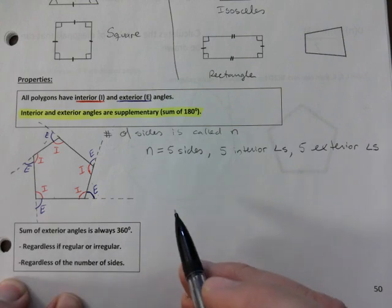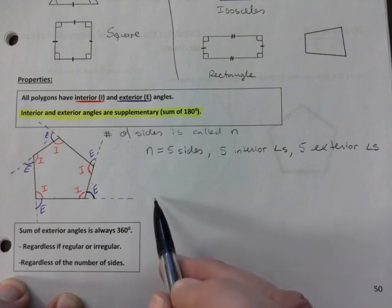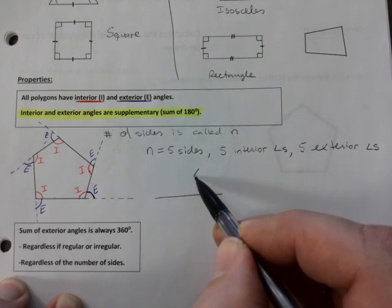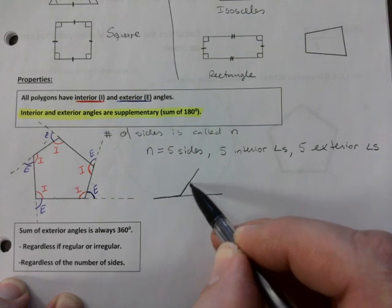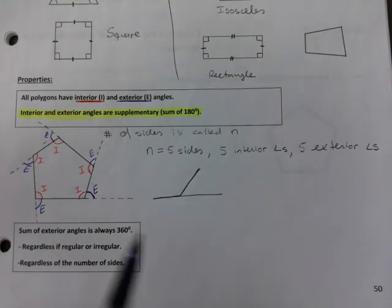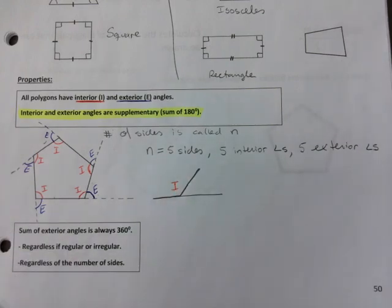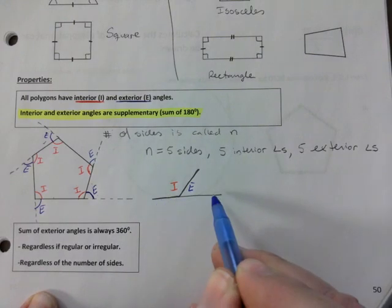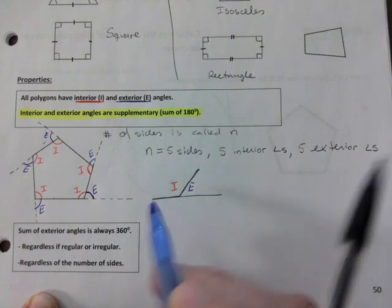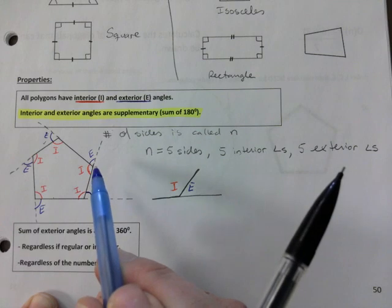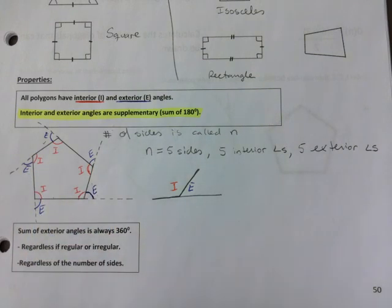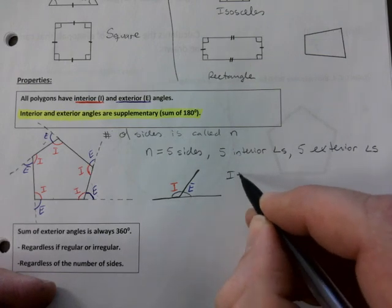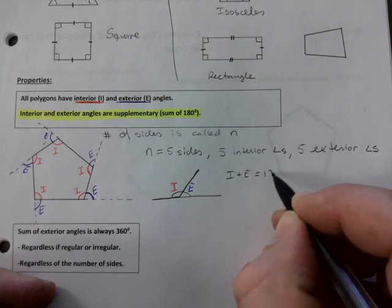And here it is one more time. The fact that wherever, wherever you have two sides meeting, right? You're going to have the interior and the exterior form a 180 degree angle, like a supplementary angle. Do you see that all around? I hope you see a 180 all around.